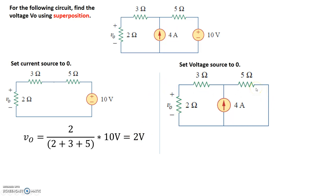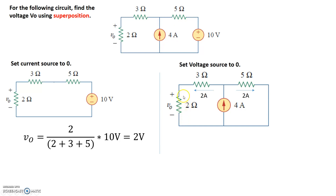Now let's look at the circuit where the voltage source is set to zero. Here we have the 4 amp current source, which reaches this junction and splits left and right. The left-hand side has two series resistances of 3 plus 2, totaling 5 ohms. The right-hand side also has 5 ohms total. Since there is equal resistance on either side, the 4 amp current divides equally — 2 amps go on the left-hand branch and 2 amps on the right. The 2 amp current on the left-hand branch flows through the 3 ohm resistor and the 2 ohm resistor as well.